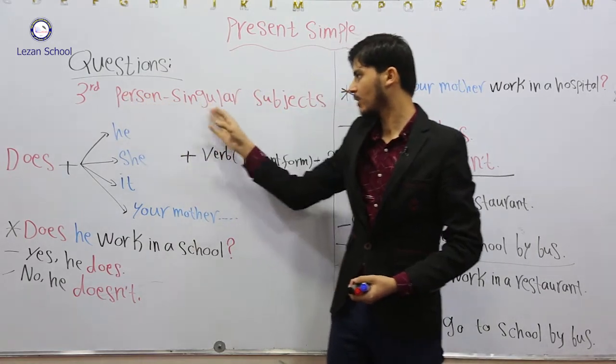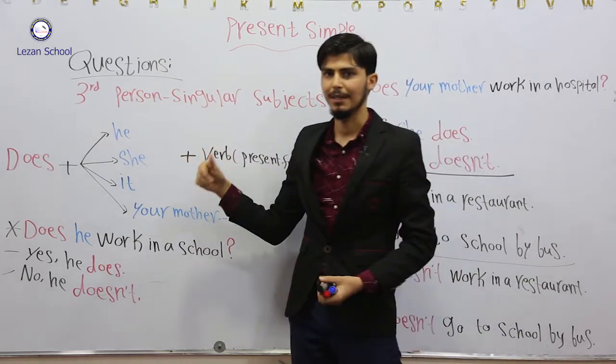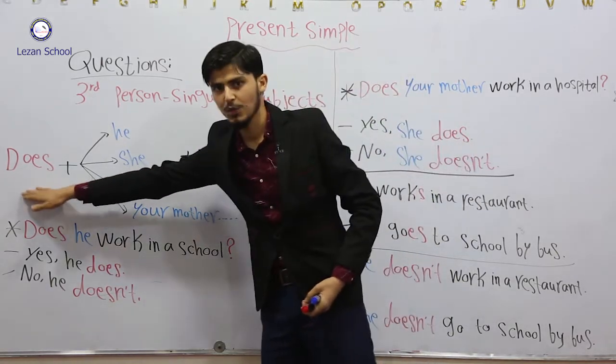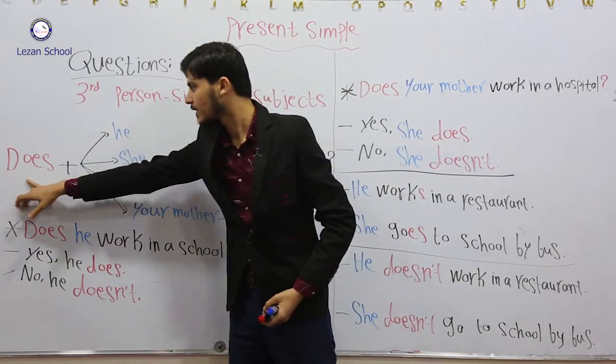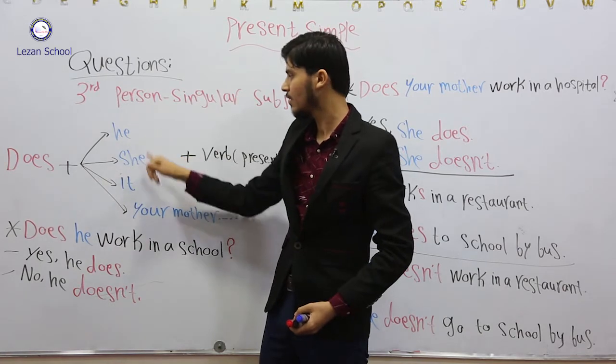Third person singular subjects are he, she, and it. Here's the rule. First, use 'does' at the beginning. Does the subject - he, she, it, or your mother, your father...